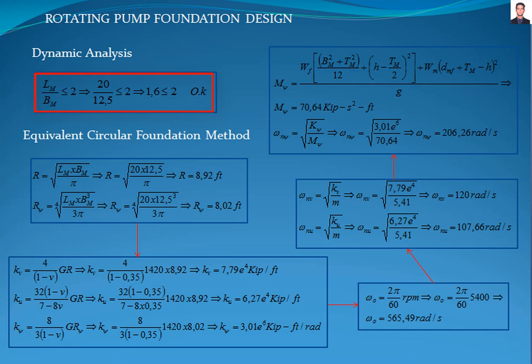The first thing to do is determine the type of vibration which the pump is subjected to. In this case, it is vertical, horizontal and rocking vibrations. Now we calculate the equivalent circular radius of the foundation with equations 5.4a and 5.4b of the American Concrete Institute 351.3R standard for vertical, horizontal and rocking cases respectively. R is the equivalent circular radius for vertical and horizontal cases, and R-psi is the equivalent rocking circular radius, giving a result of 8.92 feet for vertical and horizontal cases and 8.02 feet for rocking cases.